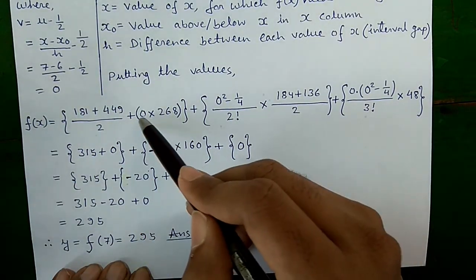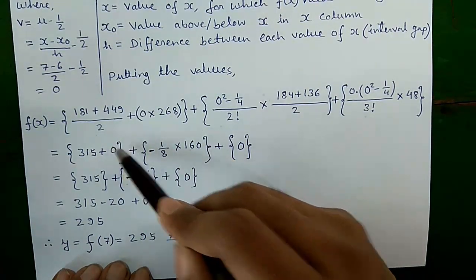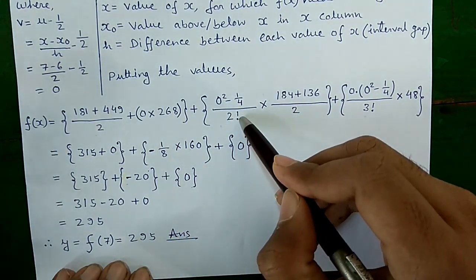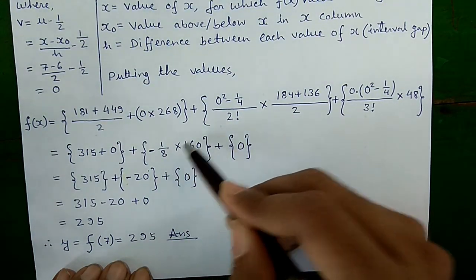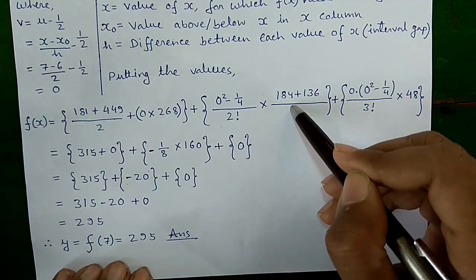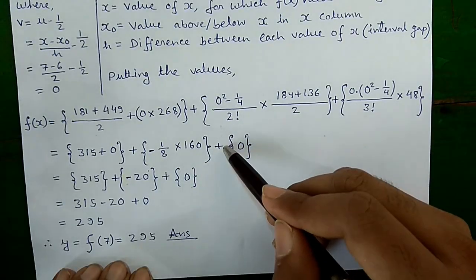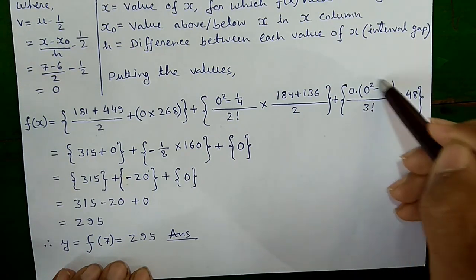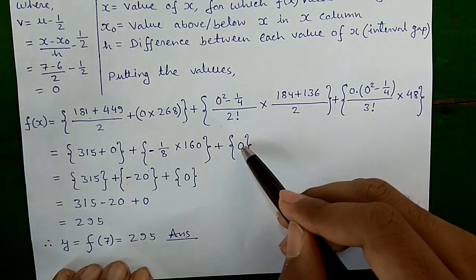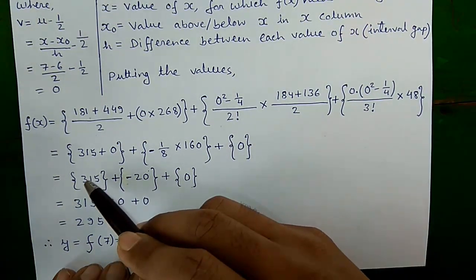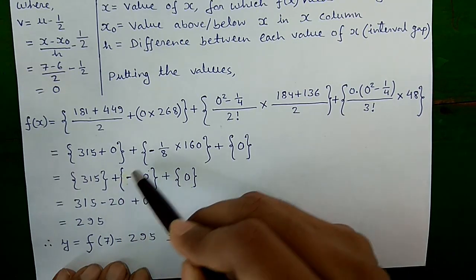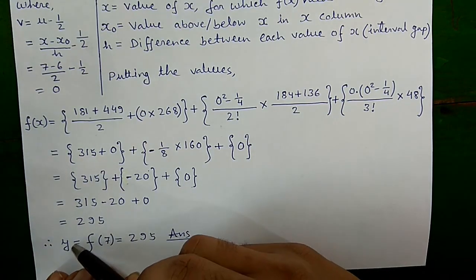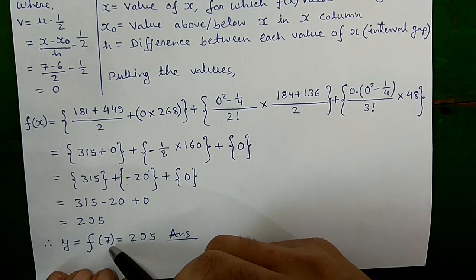We skip the fourth term since Δ³y₀ = 0. So: (181 + 449)/2 = 315, plus 0 (second term), plus 0 (third term). Then 315 + (−20) + 0 = 295. So f(7) = 295.